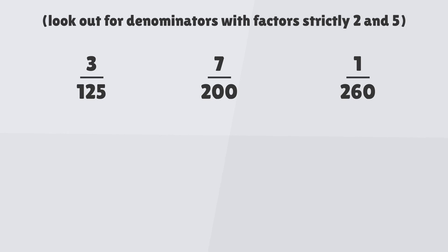So if we considered the following three fractions, we should easily be able to spot which fractions will have a terminating decimal. The first breaks down to 3 over 5 cubed. Since the denominator of the fraction only consists of 5, it will terminate.